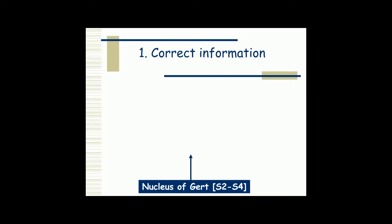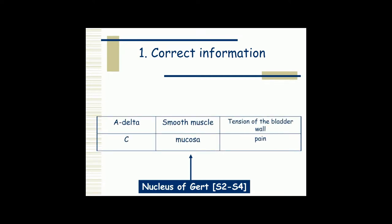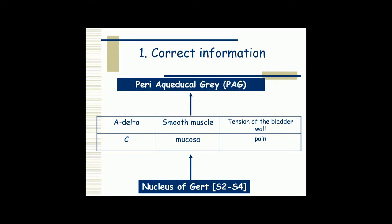The first step is correct information. Information about what's going on in the bladder is gathered in the nucleus of Gert, situated at S2–S4 level, then transported by A-delta fibers situated in the smooth muscles, which give information on the tension of the bladder wall. C fibers are only activated if there is infection or excessive filling of the bladder and will be perceived as pain. This information is sent to the periaqueductal brain, which copes with all visceral information.